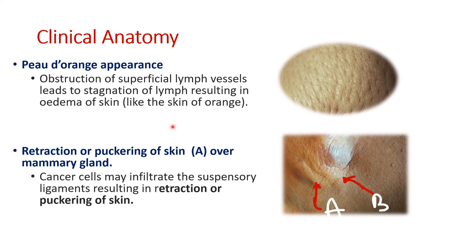The second clinical condition is retraction or puckering of the skin — the skin is pulled back. This happens because cancer cells infiltrate the suspensory ligaments that support the breast, resulting in retraction of the skin. These ligaments shorten and pull the skin toward the deeper aspect, because one end of the suspensory ligament is attached to the pectoral fascia.